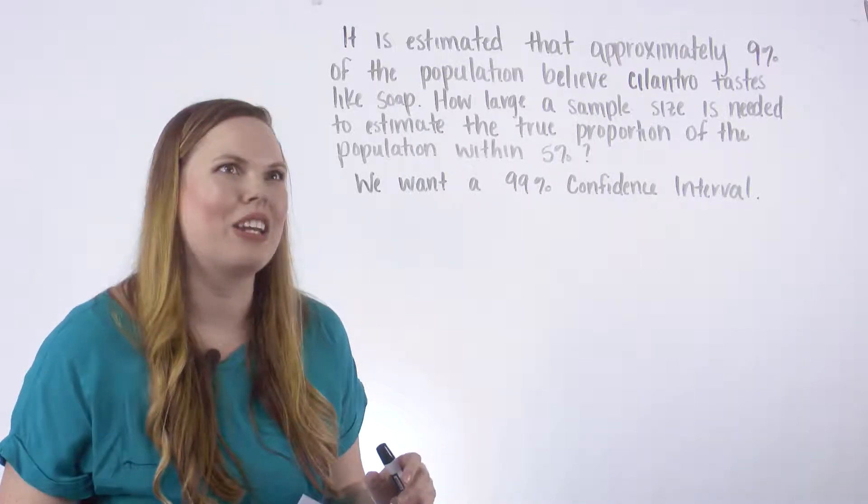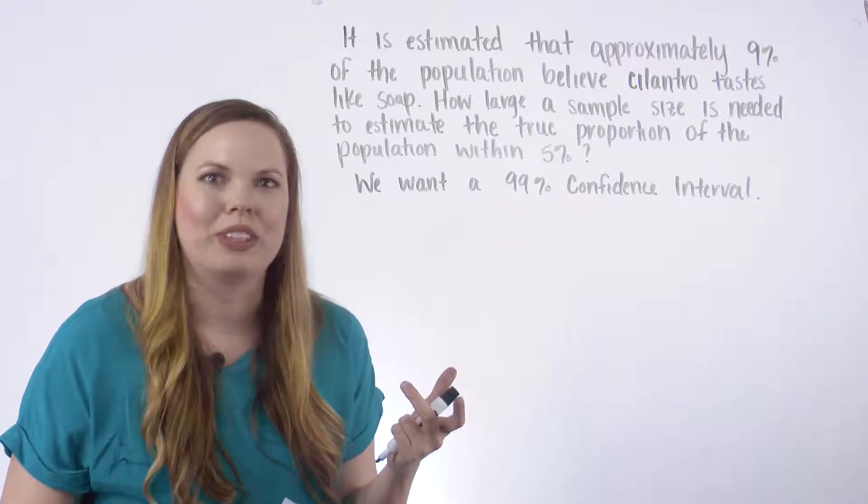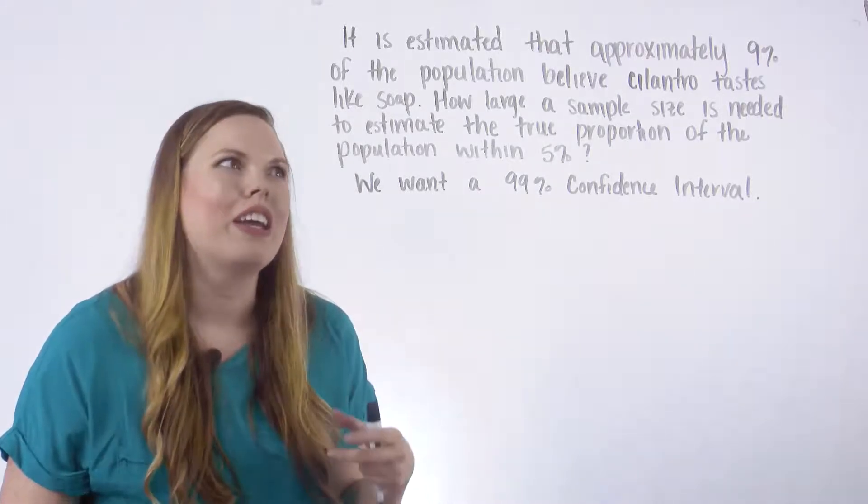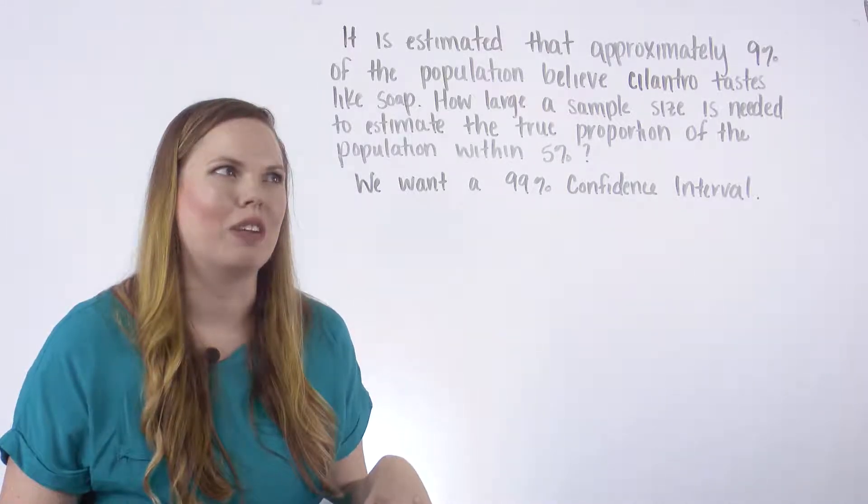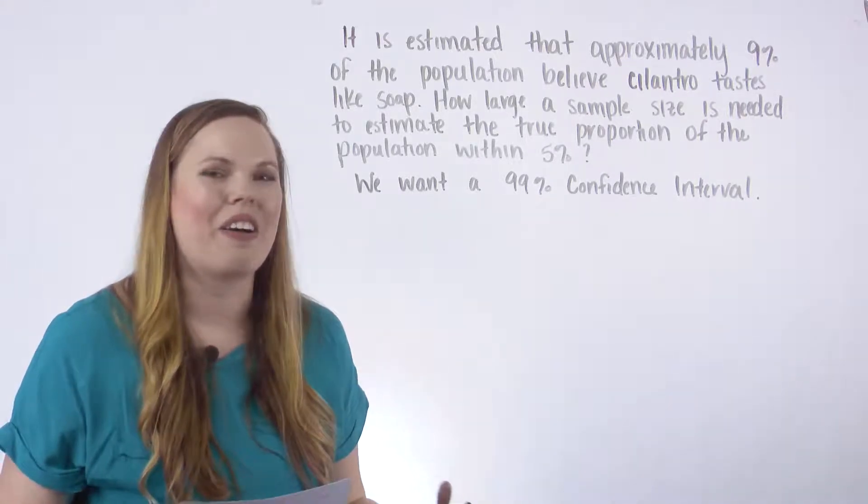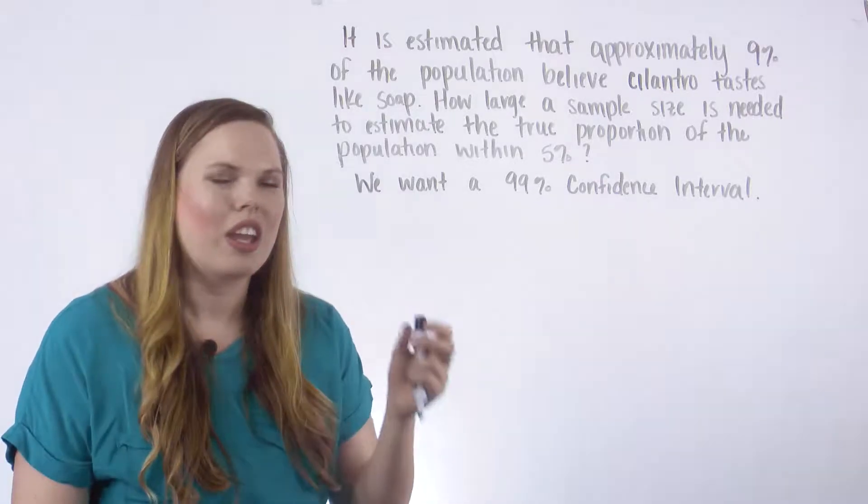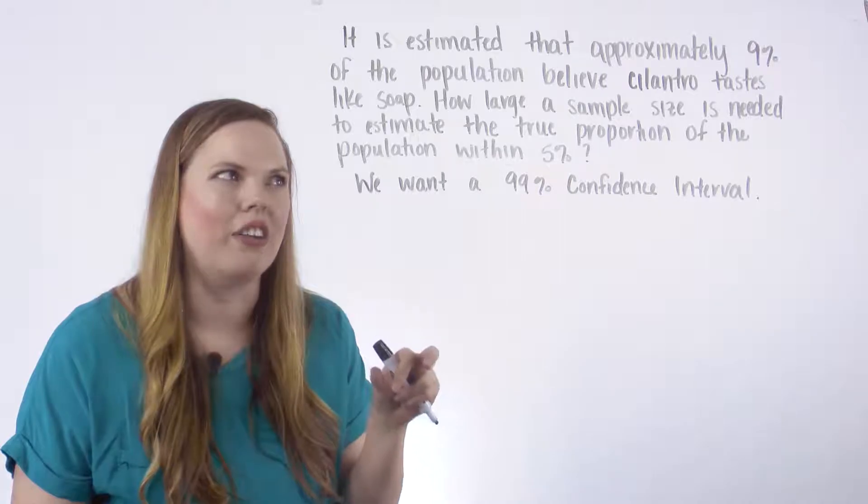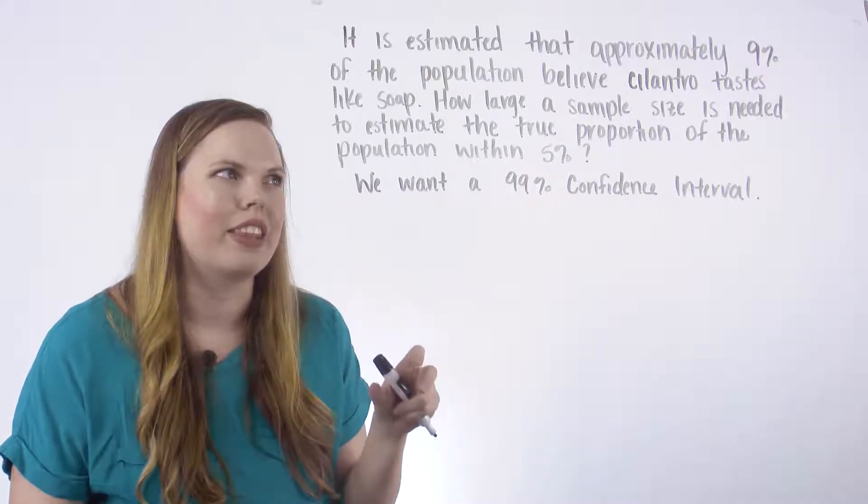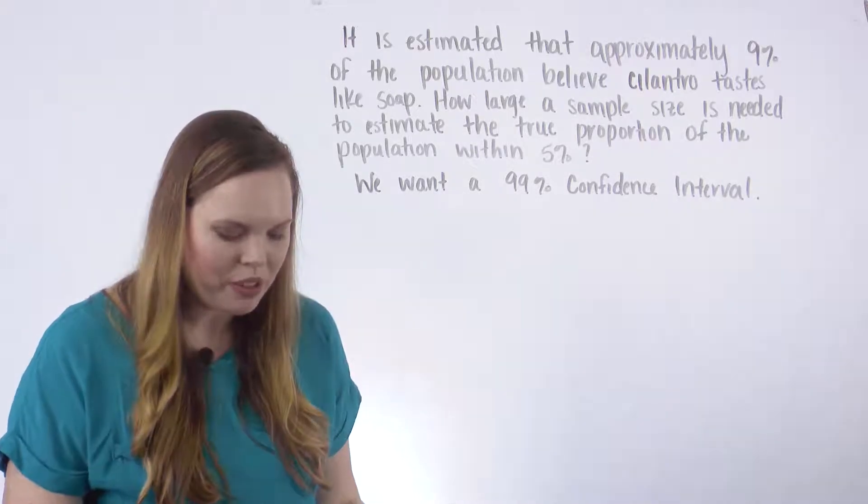So in this case, we know that approximately 9% of the population believes cilantro tastes like soap. This is just something that was estimated given a sample. And then they want to know how large of a sample size do we need to collect in order to come up with a 99% confidence interval around that p hat of 9%.